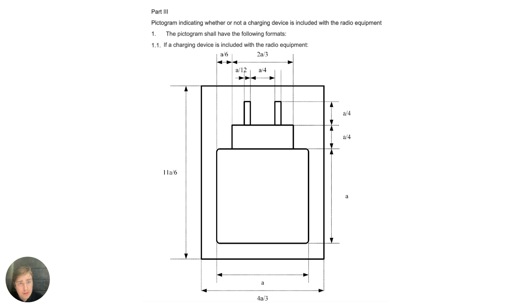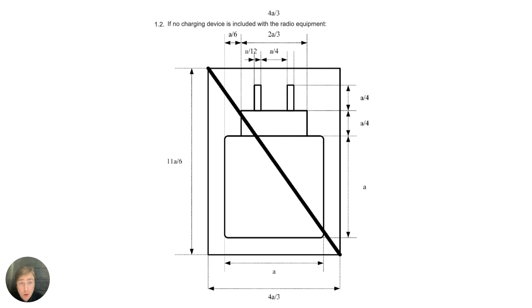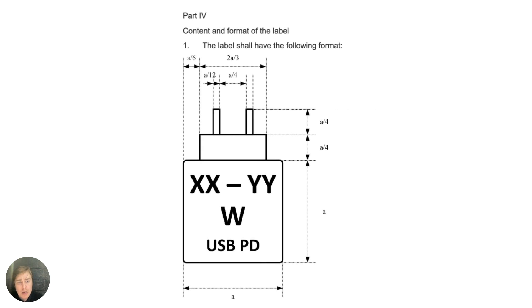The first pictogram indicates if a charging device is included — this must appear on the packaging visually. The second pictogram is used if no charging device is included — one we'll likely be seeing on iPhone boxes. The pictograms must also be combined with certain information, such as power consumption details, which you can find in the Annex inside the Radio Equipment Directive on the European Commission website.